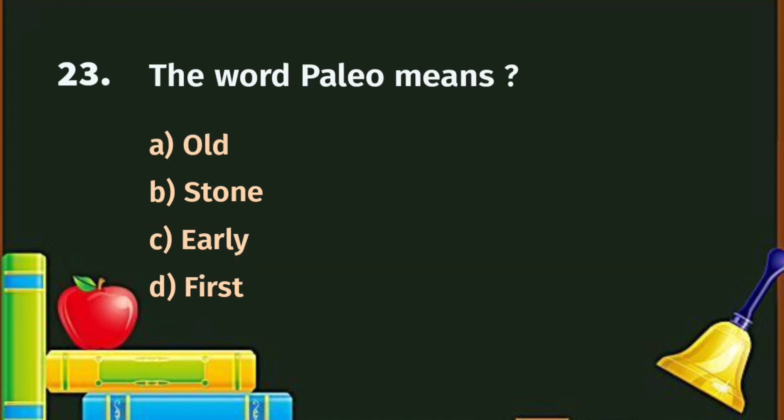Question number 23. The word Paleo means: A. Old, B. Stone, C. Early, D. First. The correct answer is A - Old.